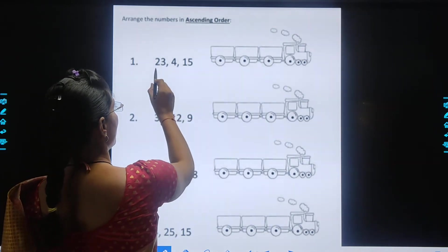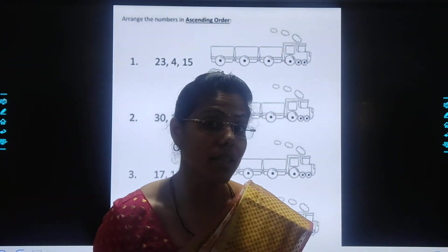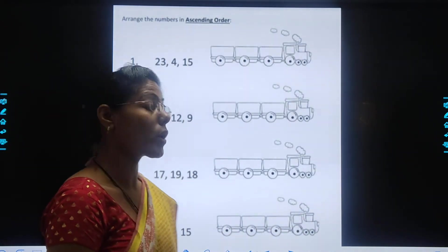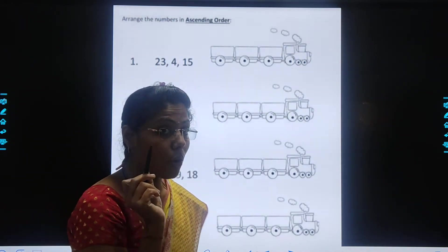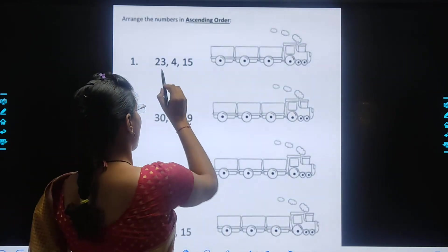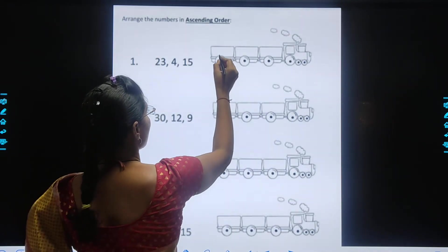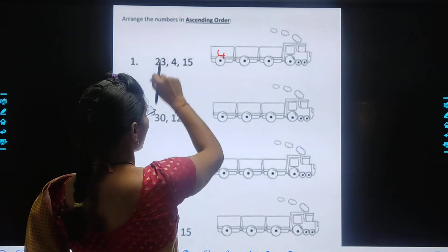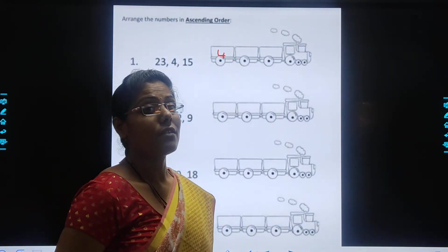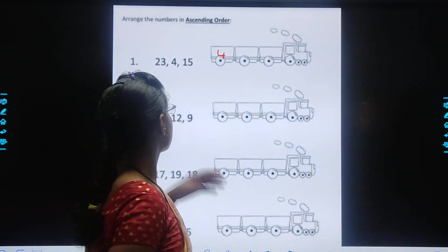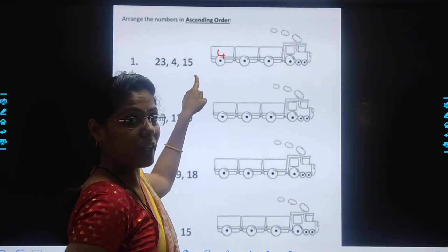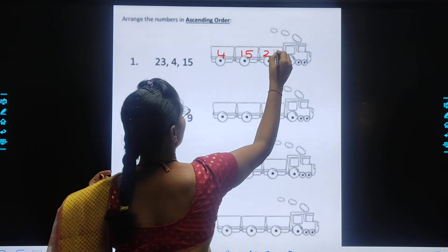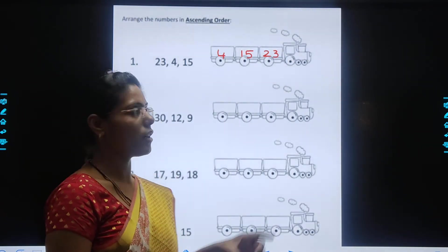Now you can see the numbers: 23, 4 and 15. We have to arrange these numbers in ascending order from smallest to biggest. First of all, we will find which is the smallest number. Sabzi chota number kamsa hai? 15? No. 23? No. 4? Yes. So we will write the smallest number first — 4. Then afterwards, which number will come? Counting: 5, 6, 7, 8, 9, 10, 11, 12, 13, 14, 15. Yes, 15 will come here. And at last, 23 will come here. So kids, we have arranged this number in ascending order from smallest to biggest.